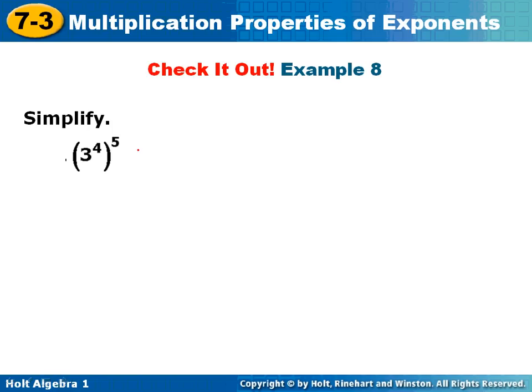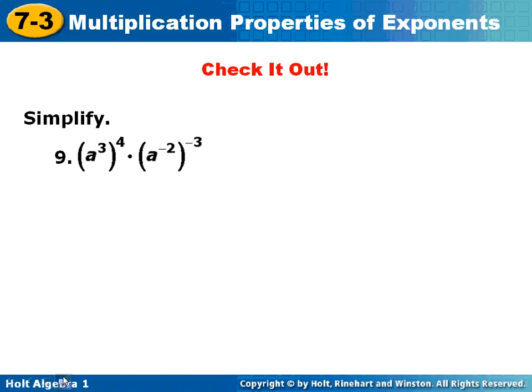Here's number 8. 3 to the 4th to the 5th would be 3 to the 20th, and you don't have to work it out. Number 9. I have to work out this first part, and so that's a to the 12th. The second part is going to be a to the 6th. Add the exponents together, and it's a to the 18th.